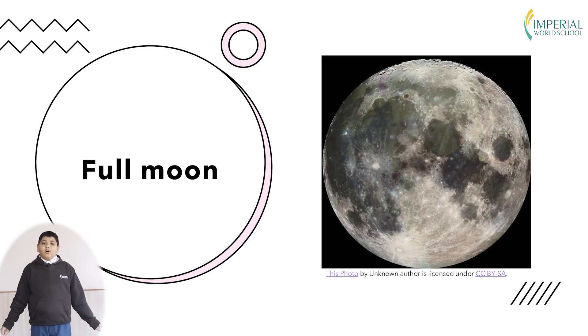Then we have the full moon where the whole moon is visible from different parts of the earth. Then it again goes through the same process but as it goes, it goes from the full moon to the new moon.